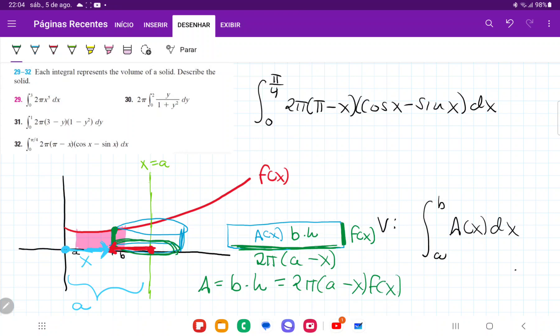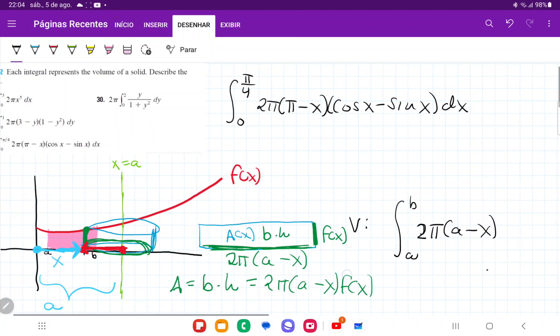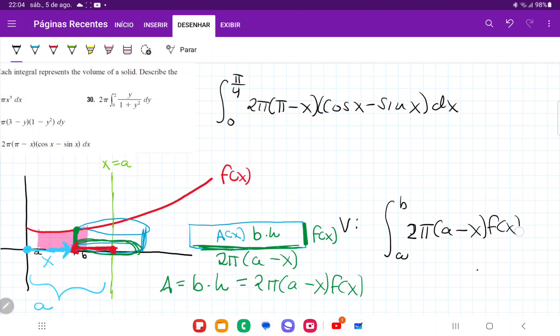So what I'm going to do now, now that I have an expression for my area, I'm just going to plug that into my integral. So I'm going to have here 2π times (a - x) times f(x) dx. And so now we just compare these expressions and let's see what matches up.